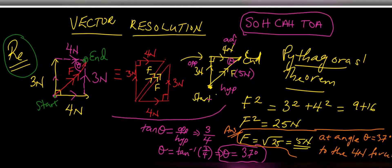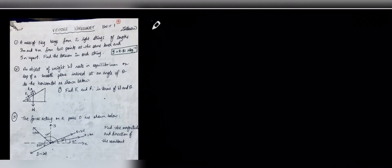Now here is our worksheet. I'm going to start with number three. We have four forces acting from a point. We can simplify this diagram and use right-angle triangles and trigonometric ratios to solve for these values. With number three, we are applying what we just went through.